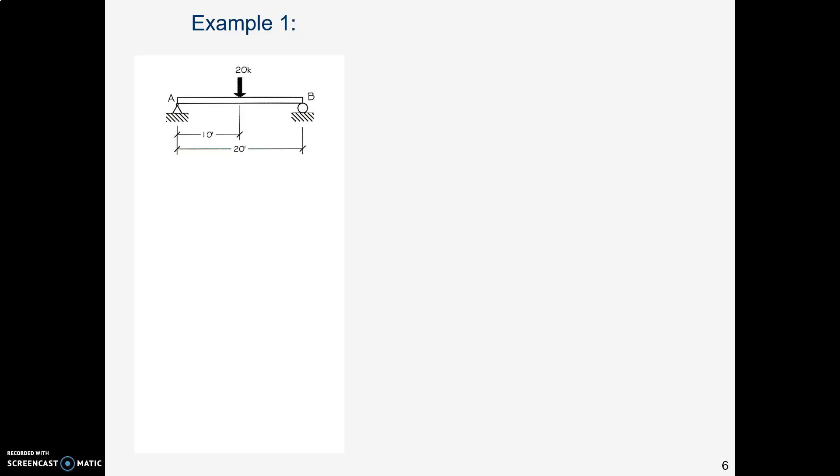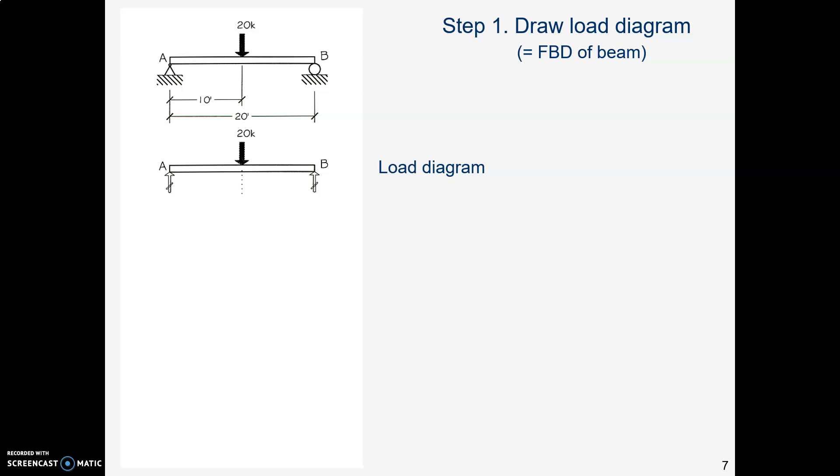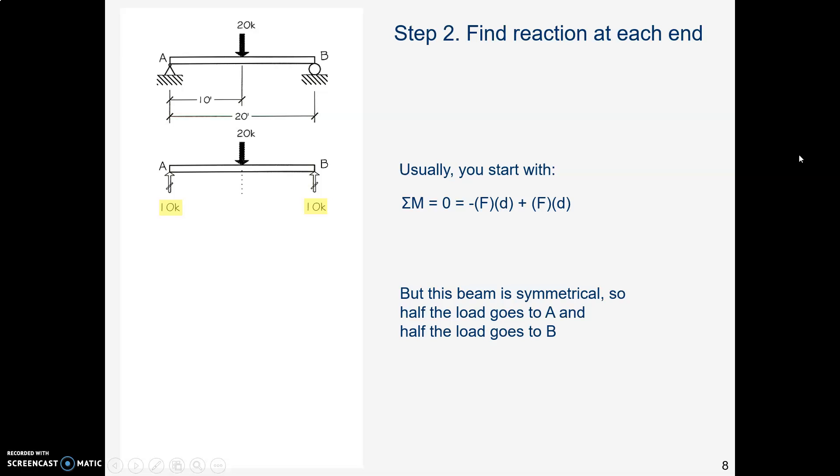Here's an example of a simple beam. The first step is we'll draw a load diagram under that beam. The next step is to figure out how big the reactions are under each end. Usually if you want to find the load at B, you would start with the equilibrium equation, sum of all moments equals zero. You'd go force times distance, force times distance, and solve for B. In this case, this is a symmetrical beam with a load right in the middle, so you can probably recognize half the load is going to be carried at each end of the beam.